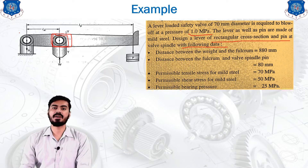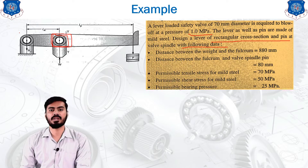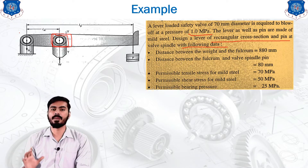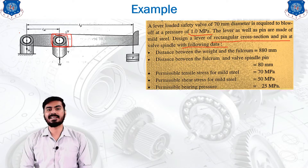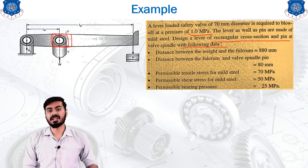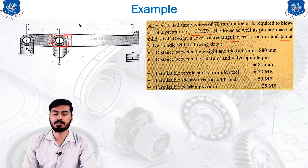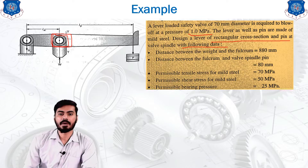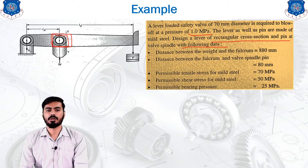In the previous designs we were calculating the bending moment or taking the moment distance from the fulcrum itself. But now we are taking the moment distance from the valve spindle itself. This is the major change which you need to keep in mind while calculating examples of the lever loaded safety valve.